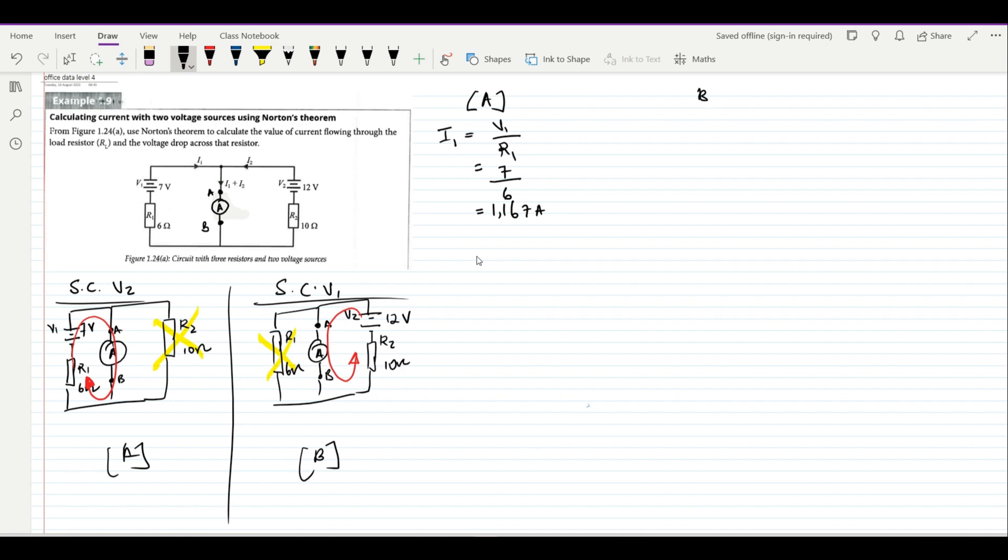We come back to circuit B—we are doing the same thing. We are going to calculate I2, which is V2 over R2. This is going to be 12 divided by 10, and we are going to get 1.2 amps.